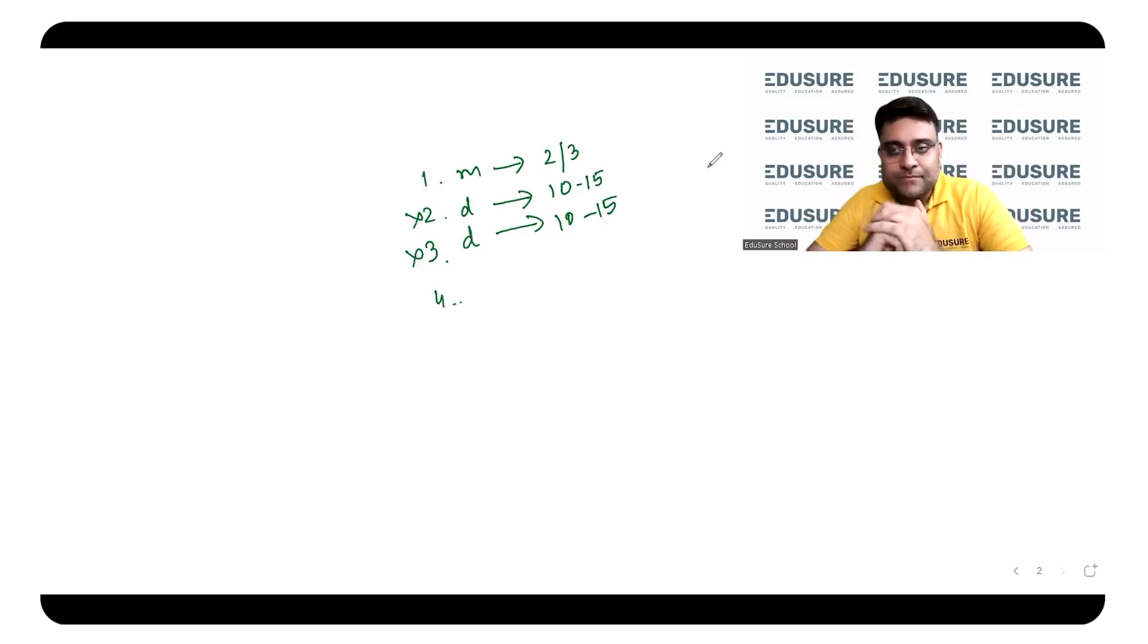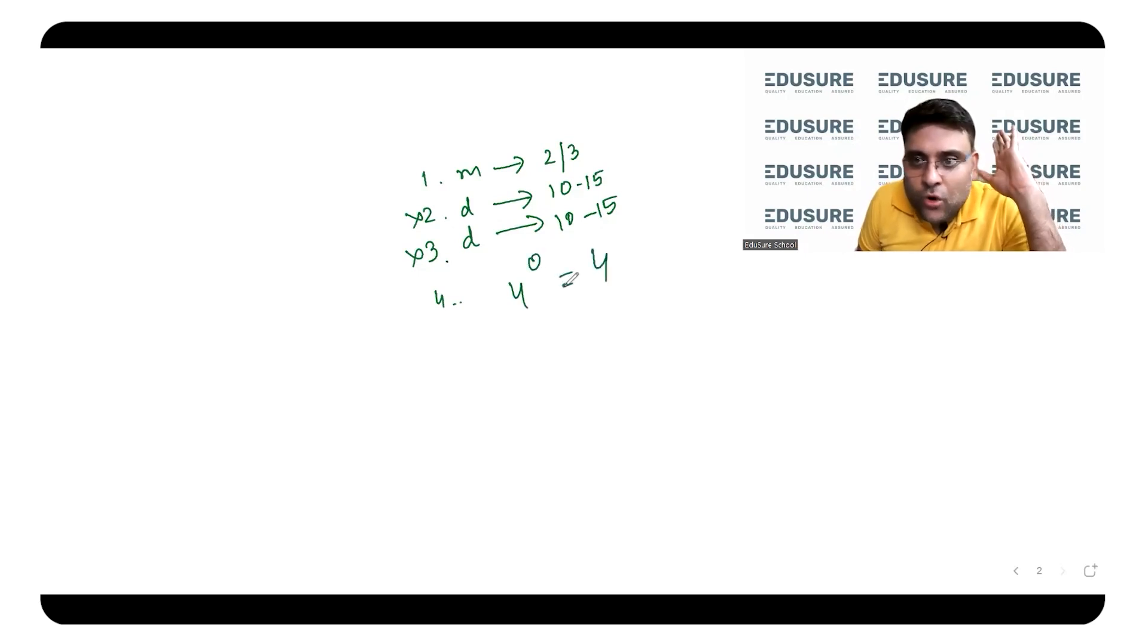Now imagine in an IIT JAM actual examination, half an hour has gone and you've not solved any question. How will your confidence be? Your confidence will be so low that you'll make mistakes like 4 to the power of 0 equals 4. It has happened with me in a competitive examination also - you're not the only one. But fortunately I learned from my mistake and I learned that I will never make this mistake. I will analyze the paper first. I will only do the easier ones first, the ones that are easy for me.